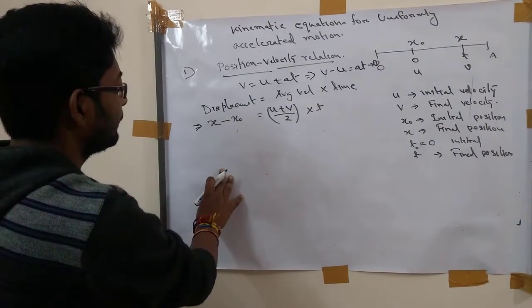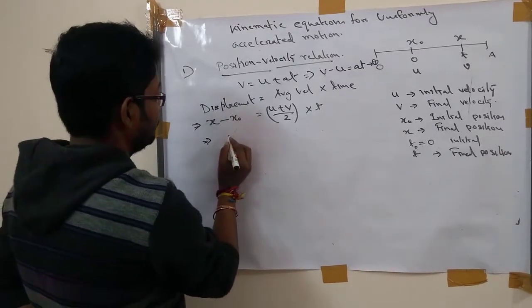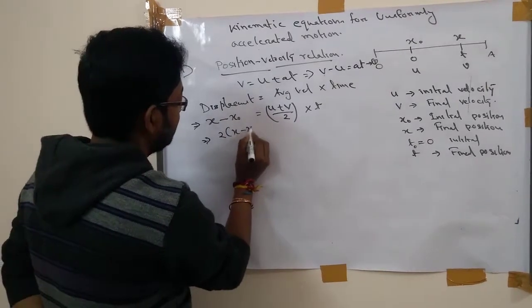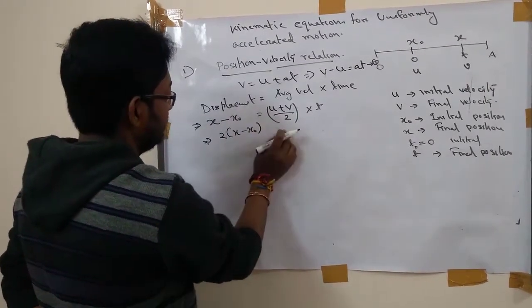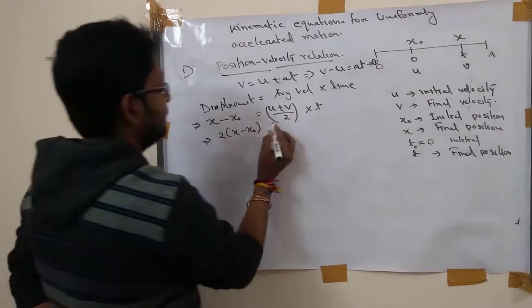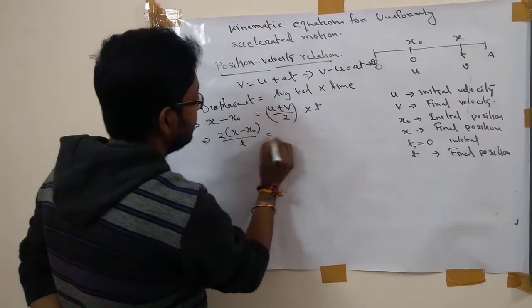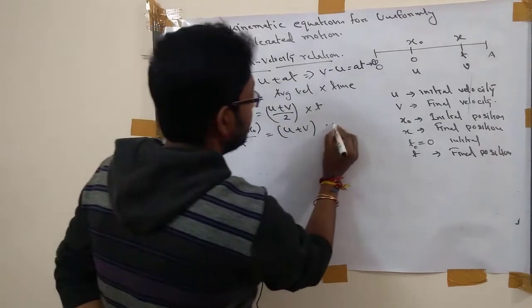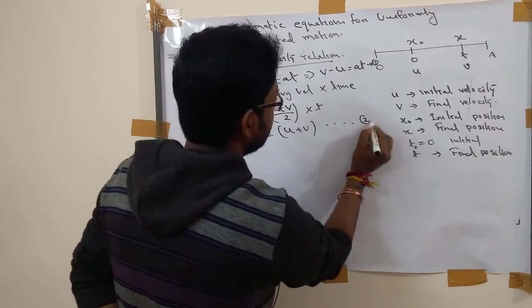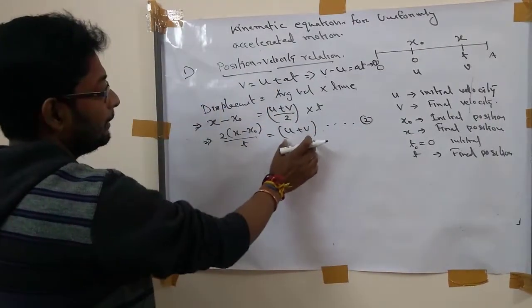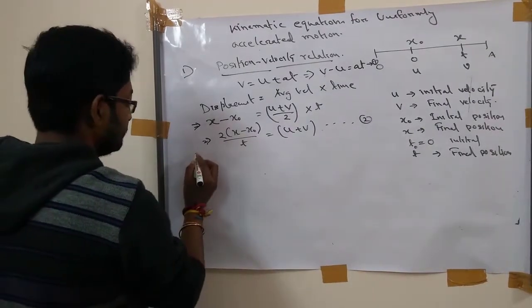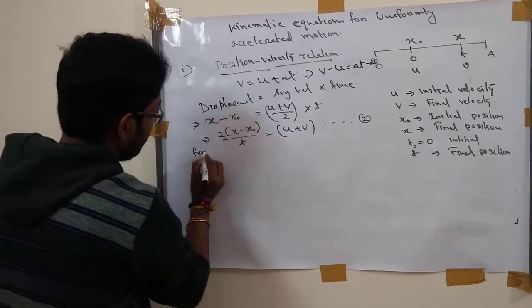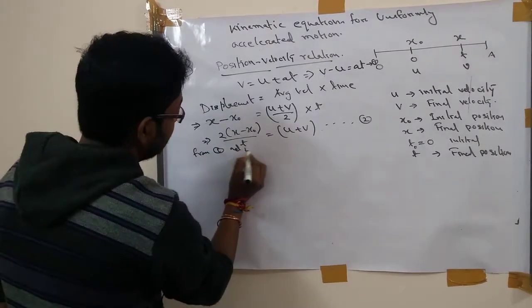Now, from that, we can write: 2 times x minus x naught by t equal to u plus v. This is equation 2. If we multiply these two equations, from equation 1 and 2, multiply.